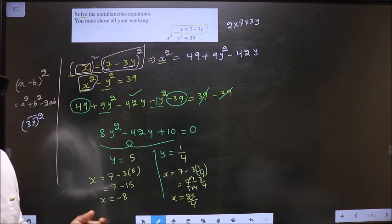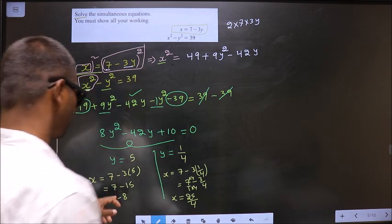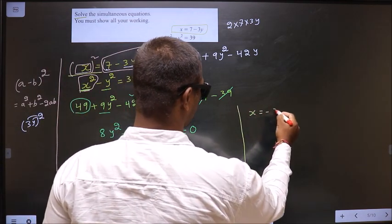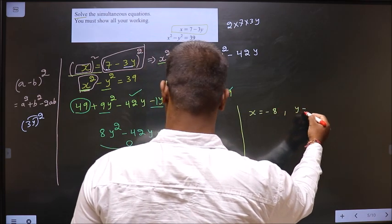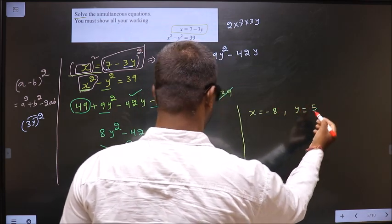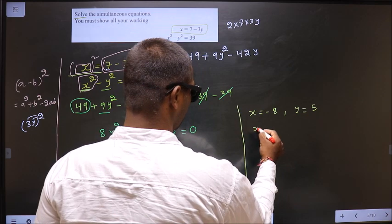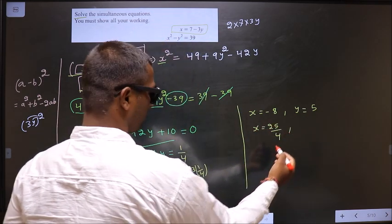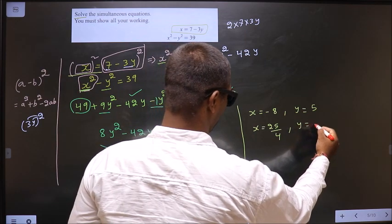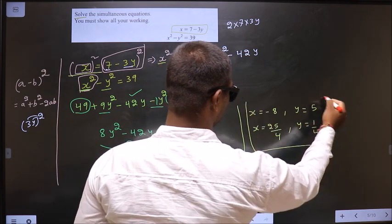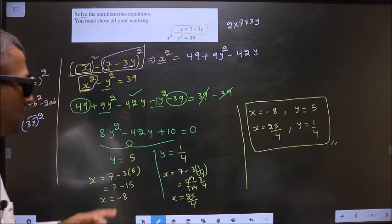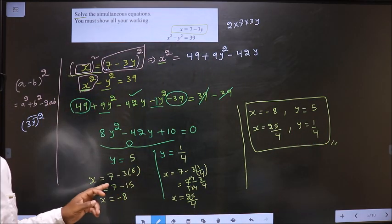So, now our answer is when x equal to minus 8, y is 5 and when x is 25 by 4, y is 1 by 4. This is our answer. Am I clear?